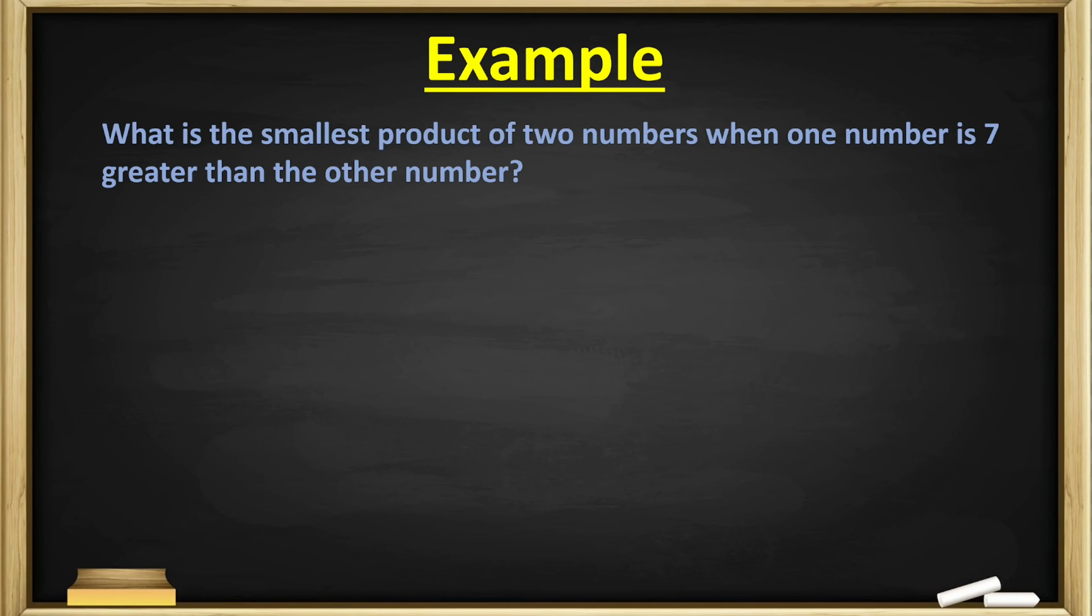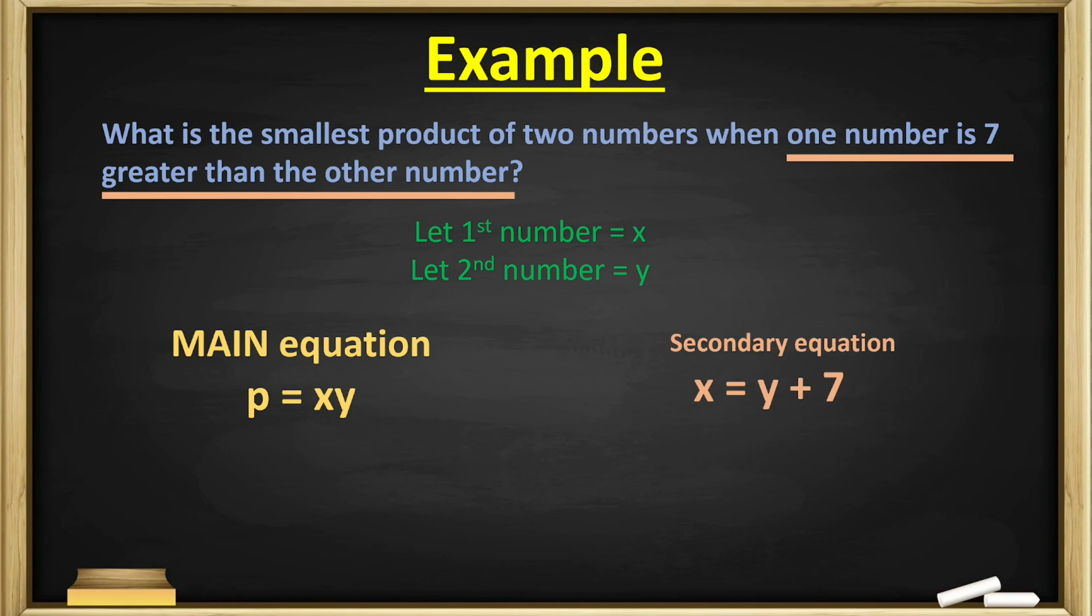Let's do an example. What is the smallest product of two numbers when one number is seven greater than the other number? Right away, the word 'smallest product' means that we're looking for a minimum. We also now know the main equation has to deal with the word product. Product is any two numbers multiplied by each other, so p = xy, where x is the first number and y could be the second number.